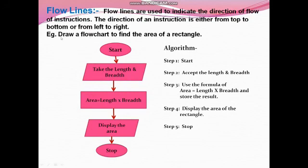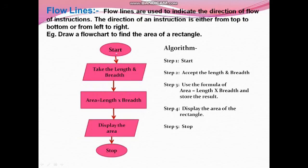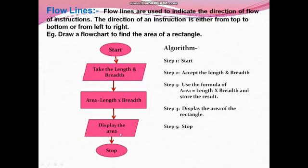Draw a flowchart to find the area of a rectangle. First, we will write the algorithm. Step one: Start. Step two: Accept the length and breadth. Step three: Use the formula — Area = Length × Breadth — and store the result. Step four: Display the area of the rectangle. In the flowchart, Start and Stop are written in oval-shaped terminal boxes. Accept length and breadth is the input, and display the area is the output, both in parallelogram boxes. The formula Area = Length × Breadth is placed in a rectangle process box.